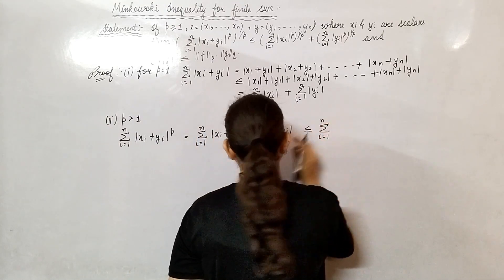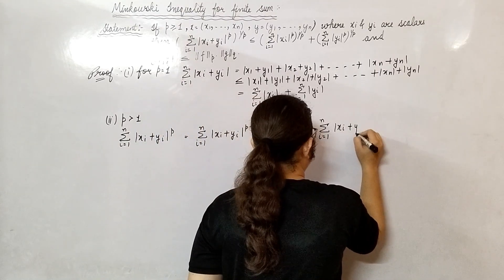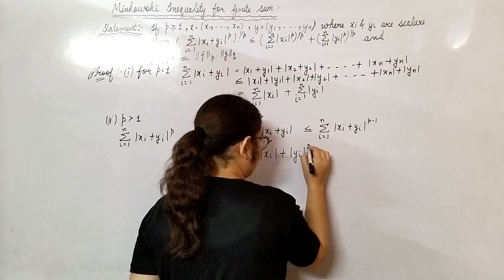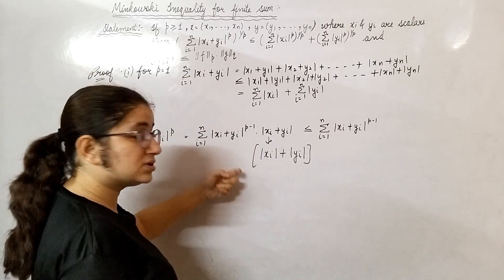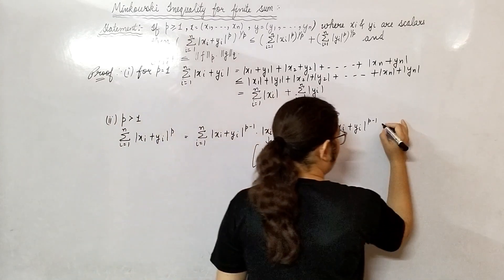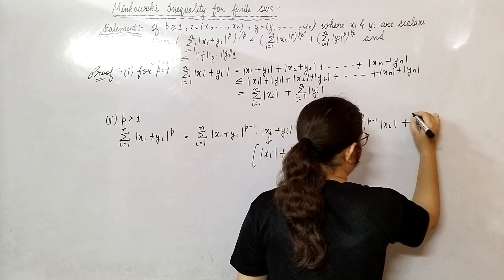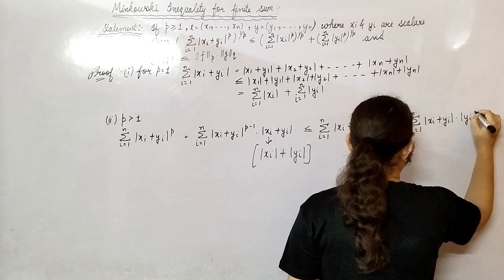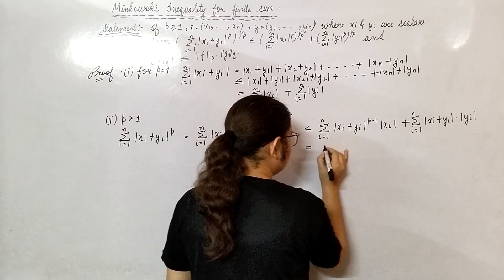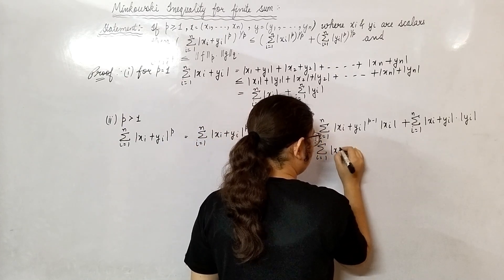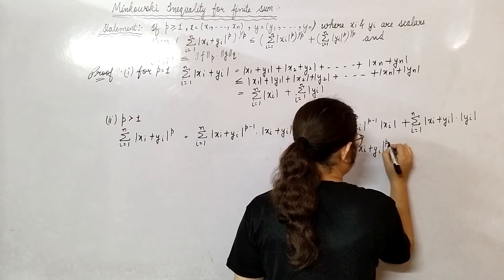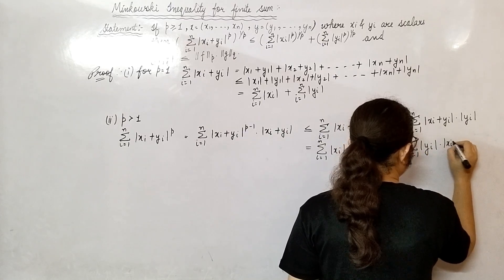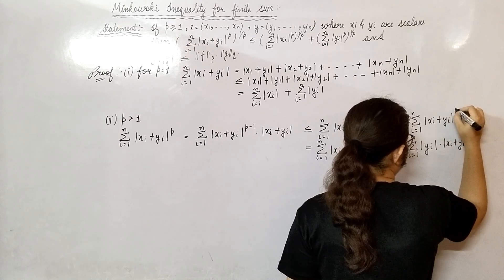Summation i from 1 to n. I will open these two separately: |x_i + y_i|^(p-1). What I will do? I will open this separately, |x_i + y_i|, and after that we will multiply these terms. So I'm combining these two steps. Summation i from 1 to n, |x_i + y_i|^(p-1) · |x_i| plus summation i from 1 to n, |x_i + y_i|^(p-1) into |y_i|.